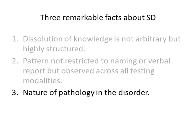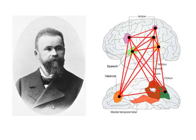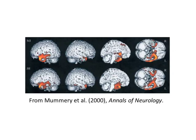The third remarkable fact concerns the nature of the pathology observed in the disorder. Wernicke might have explained the pattern as arising from a kind of global pathology throughout the brain, since he believed those associations were widely distributed. But that is not in fact what we see. This figure shows regions of gray matter atrophy in two patients with semantic dementia — anywhere colored orange shows where the patient had less gray matter than age-matched healthy adults. The pathology tends to be concentrated in the anterior part of the temporal cortex, more pronounced on the left, but with pathology in both left and right hemispheres — the characteristic pattern seen in semantic dementia.